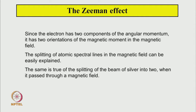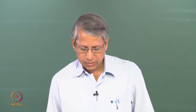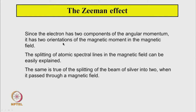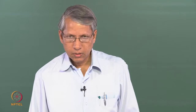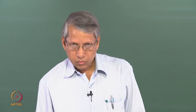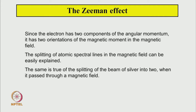The Zeeman effect — the splitting of spectral lines in the presence of a magnetic field — can also be very easily explained by the two possible orientations of the magnetic moment in the magnetic field. The same is true for the Stern-Gerlach experiment, where a silver atom beam splits into two. The origin is again that the spin angular momentum takes two values, plus half and minus half, giving two components of magnetic moment and causing the beam to split into two.